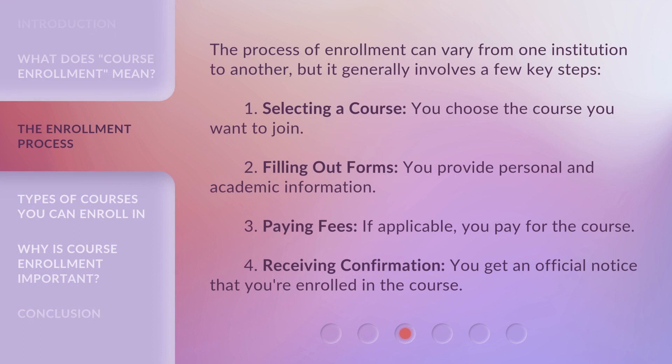The process of enrollment can vary from one institution to another, but it generally involves a few key steps. One: selecting a course — you choose the course you want to join. Two: filling out forms — you provide personal and academic information. Three: paying fees — if applicable, you pay for the course. Four: receiving confirmation — you get an official notice that you're enrolled in the course.